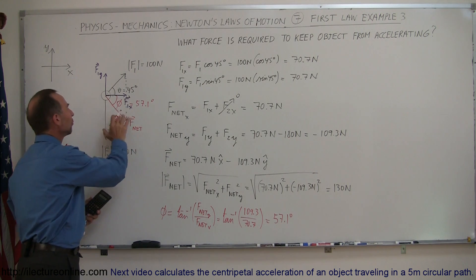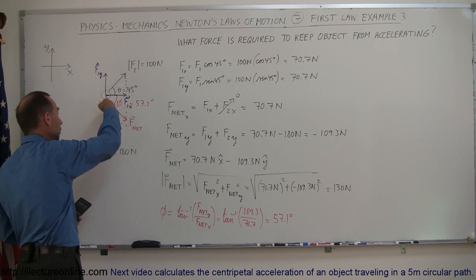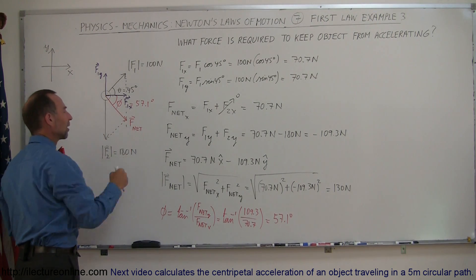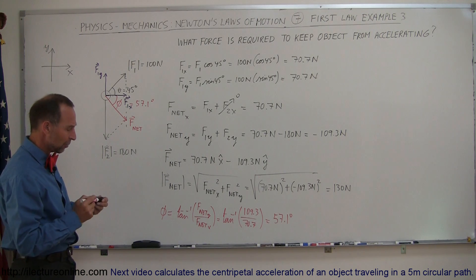So that's the net force acting on this object, which of course, using Newton's second law, tells us that we would have an acceleration in this direction. So to cancel that out, we have to have an equal and opposite force in the other direction.